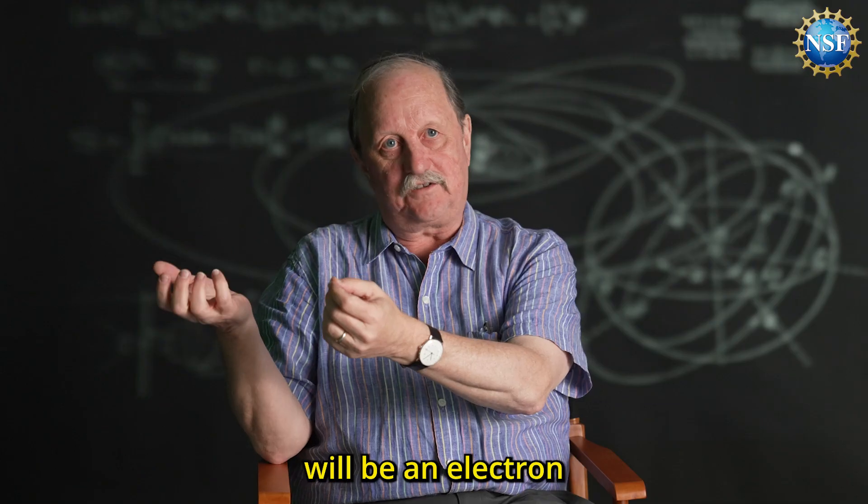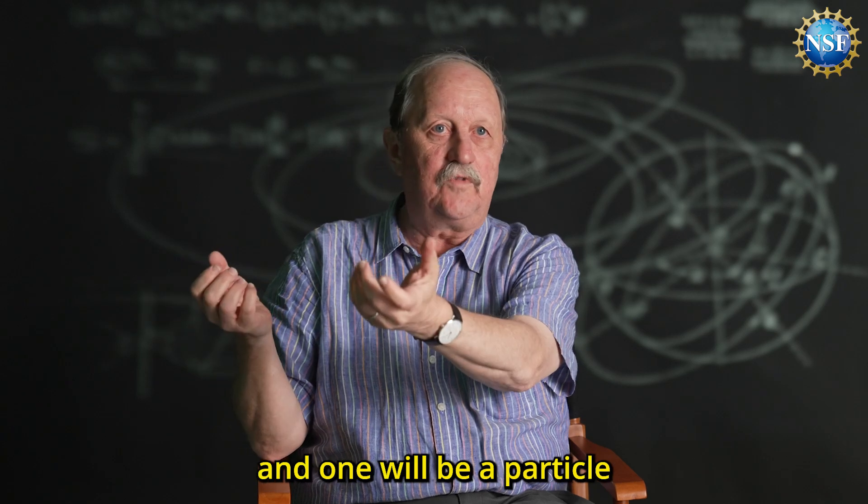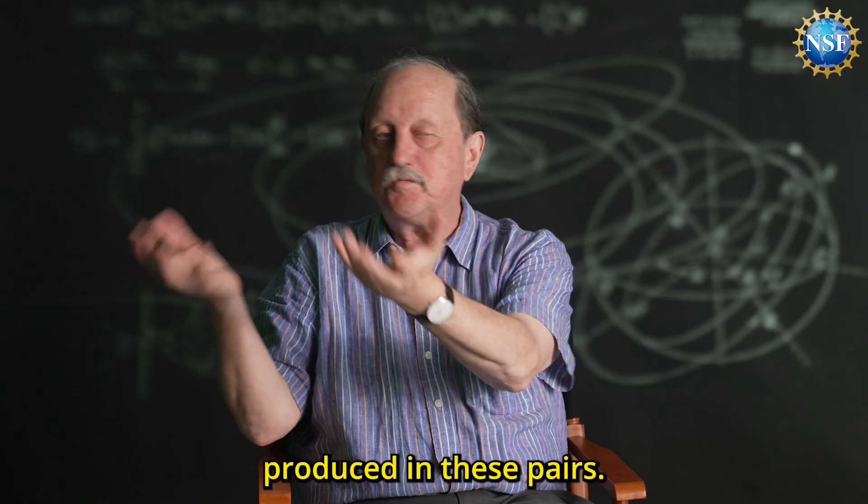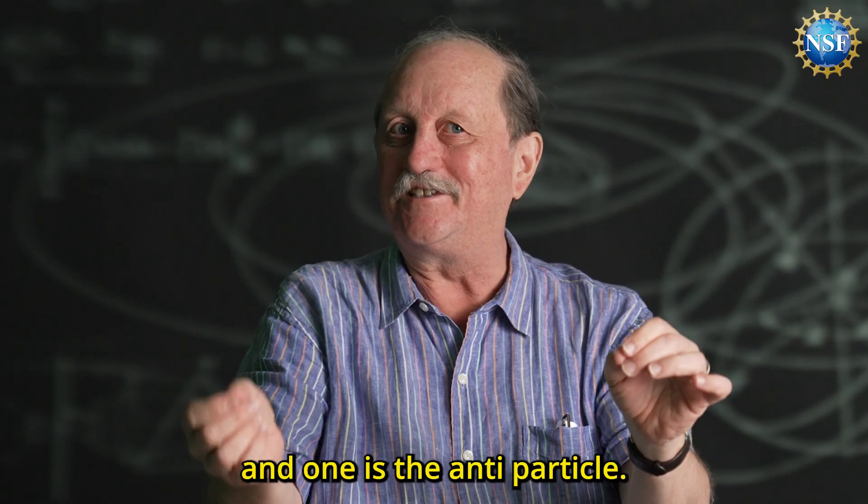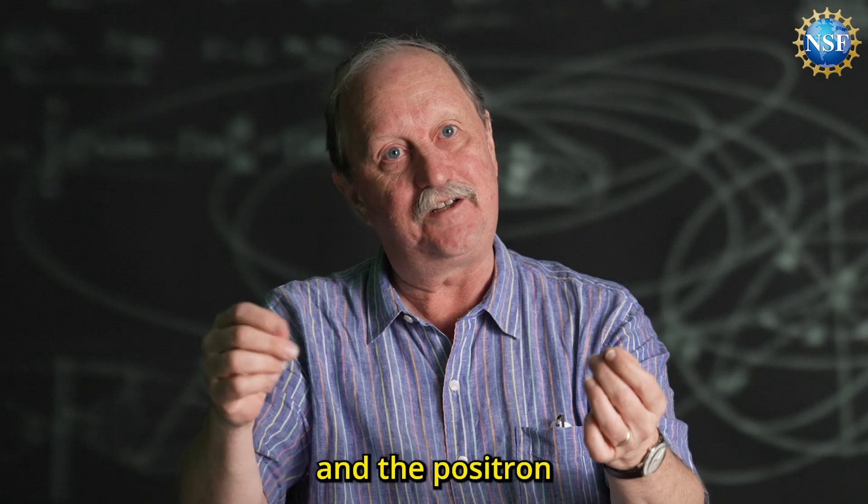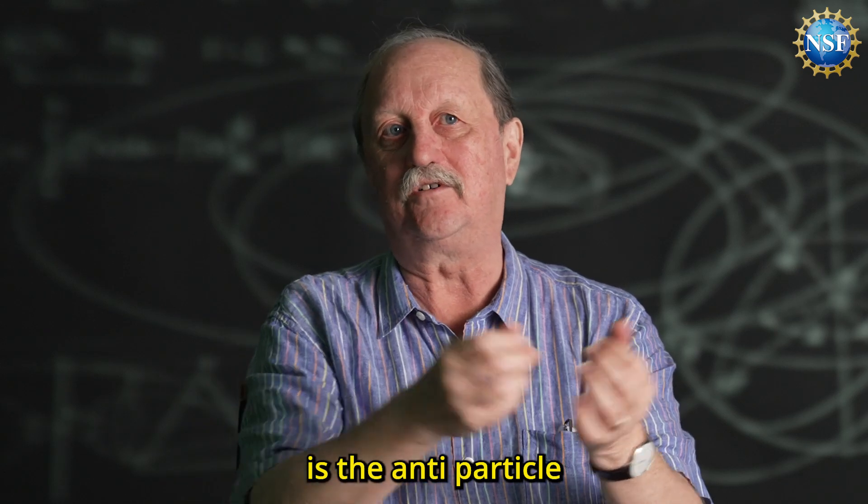One of them will be an electron with a negative charge, and one will be a particle we call a positron with a positive charge. They're always produced in these pairs - one is a particle and one is the antiparticle. The electron is the antiparticle of the positron and vice versa.